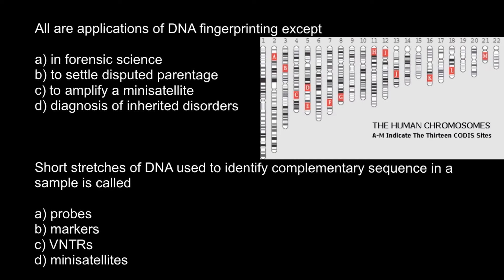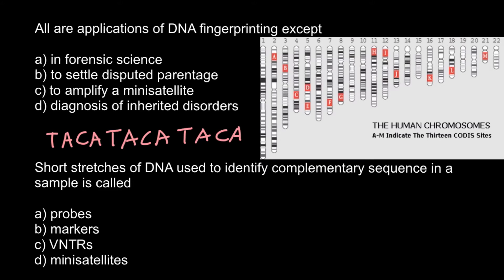It means that in some sites on our genome — designated here with red color — we have different numbers of repeats of the core sequence. For example, this can be T, A, C, A, and such a sequence can repeat in different people a different number of times — for example, two times or three times.